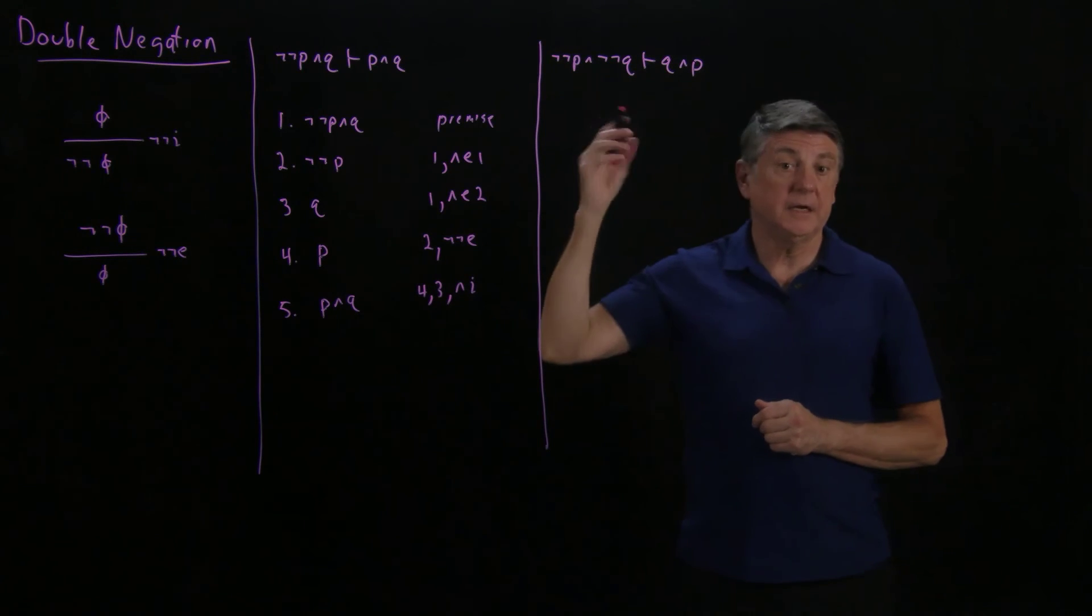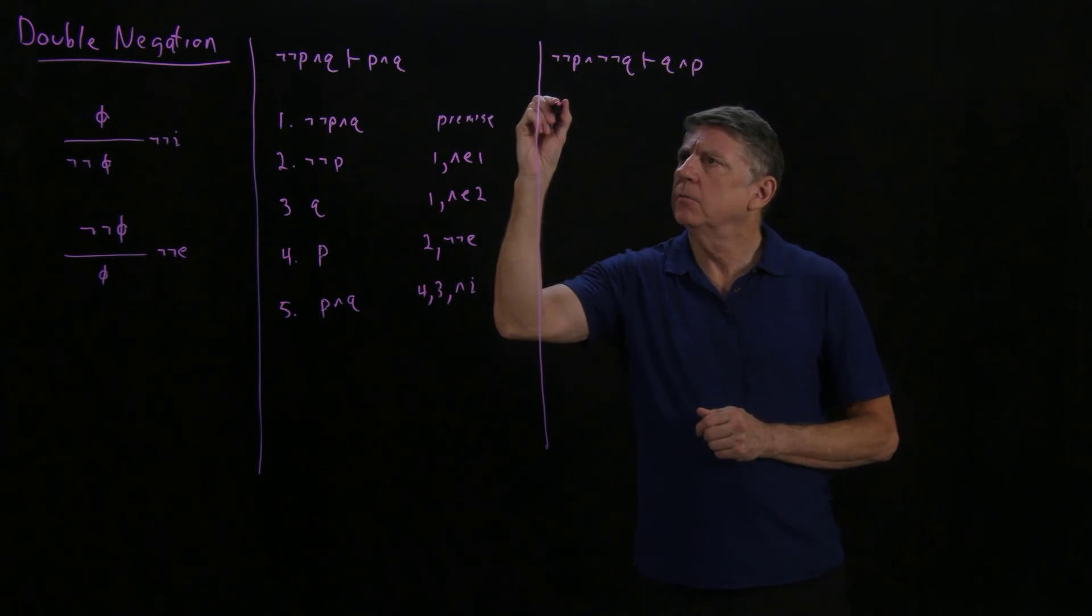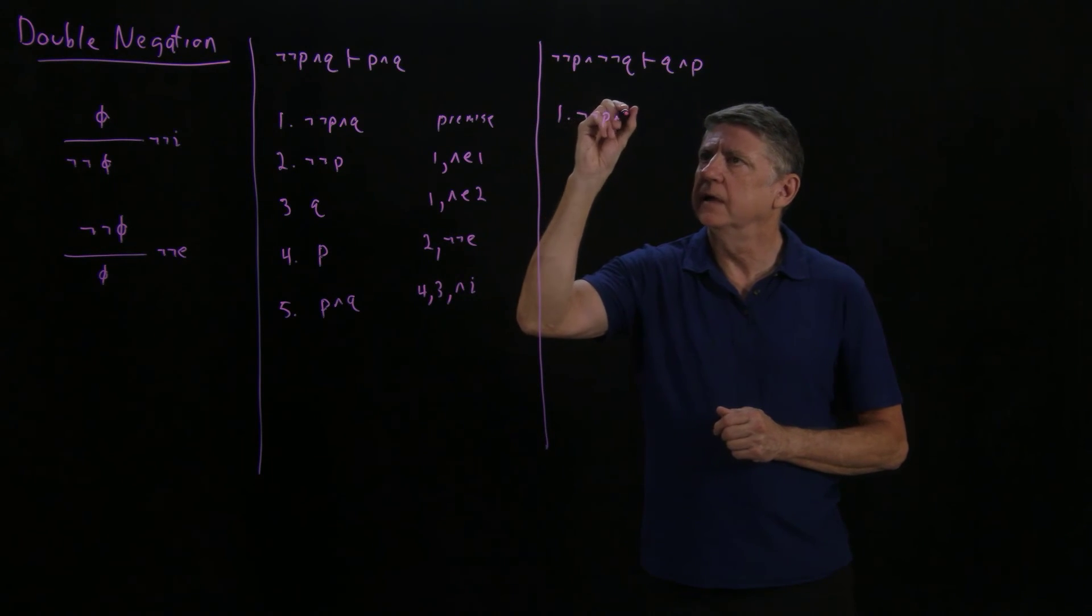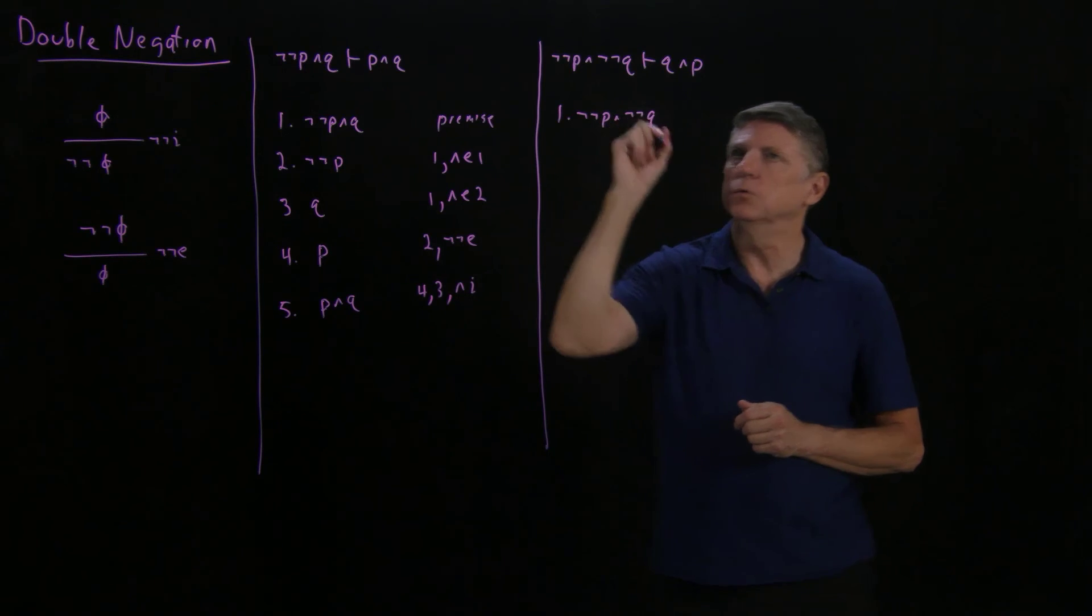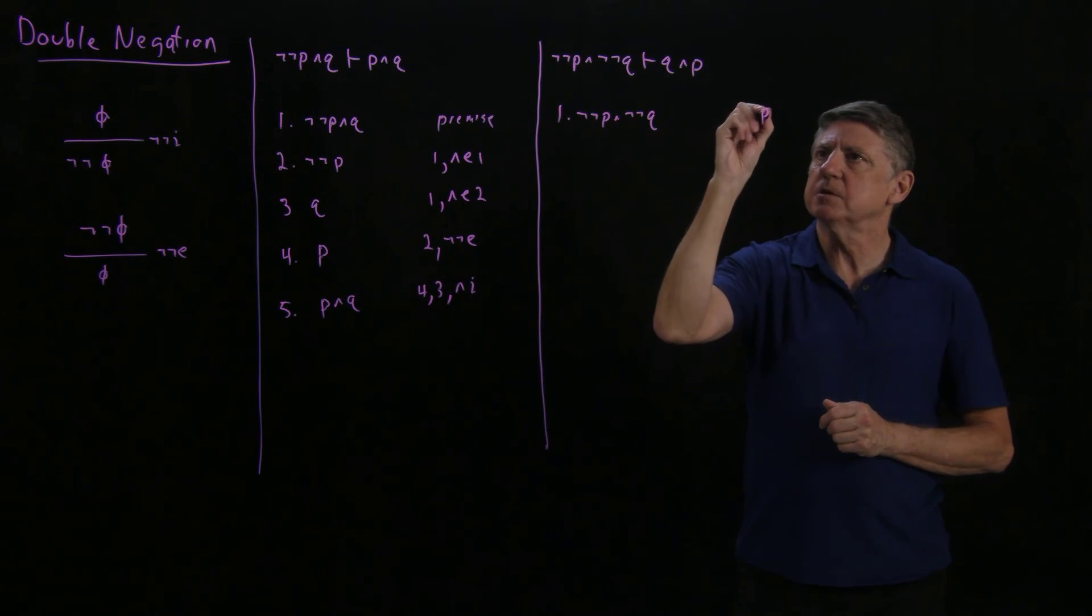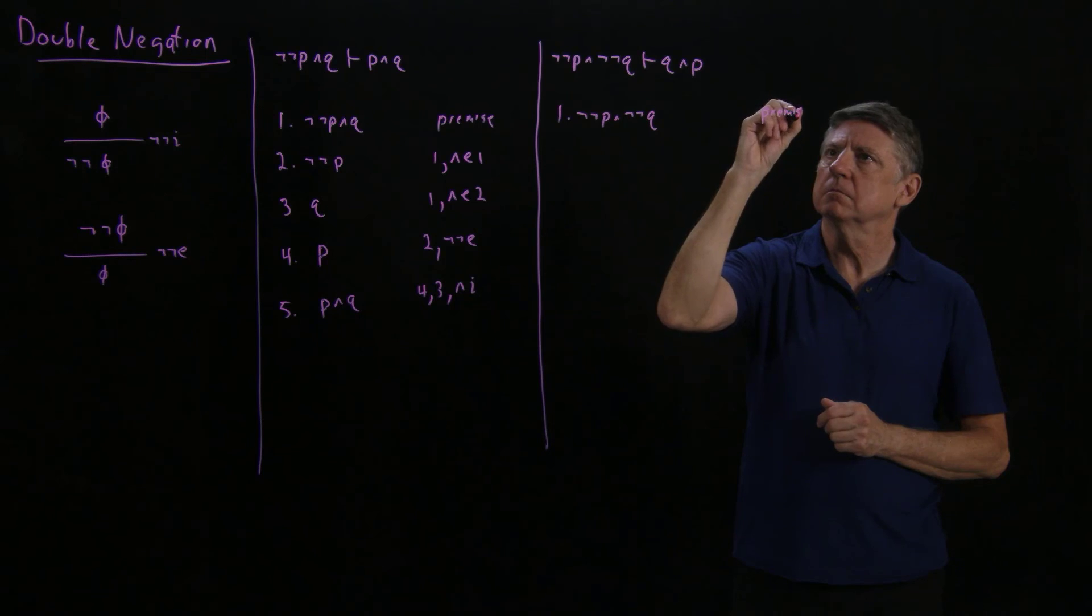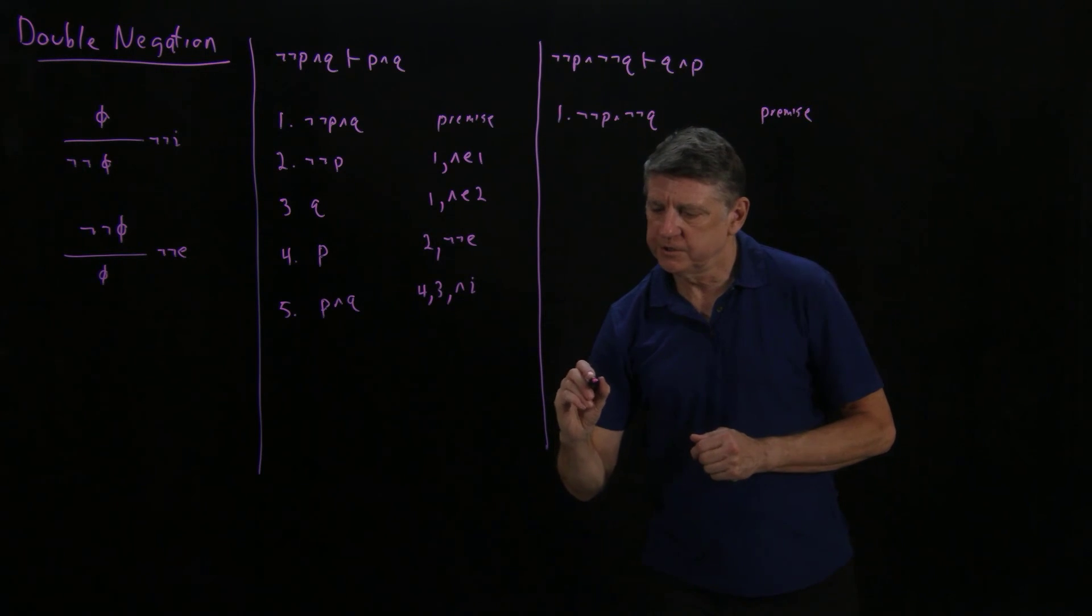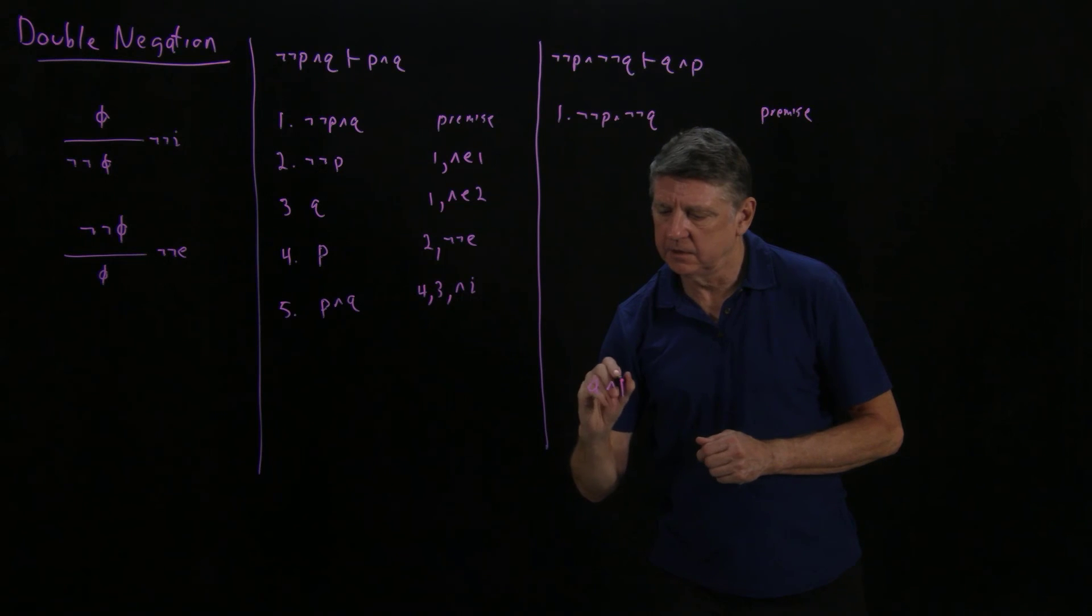Well, we would begin, as always, by writing the premise, which is not not p and not not q, so that is our premise, and we would write our conclusion, which is q and p.